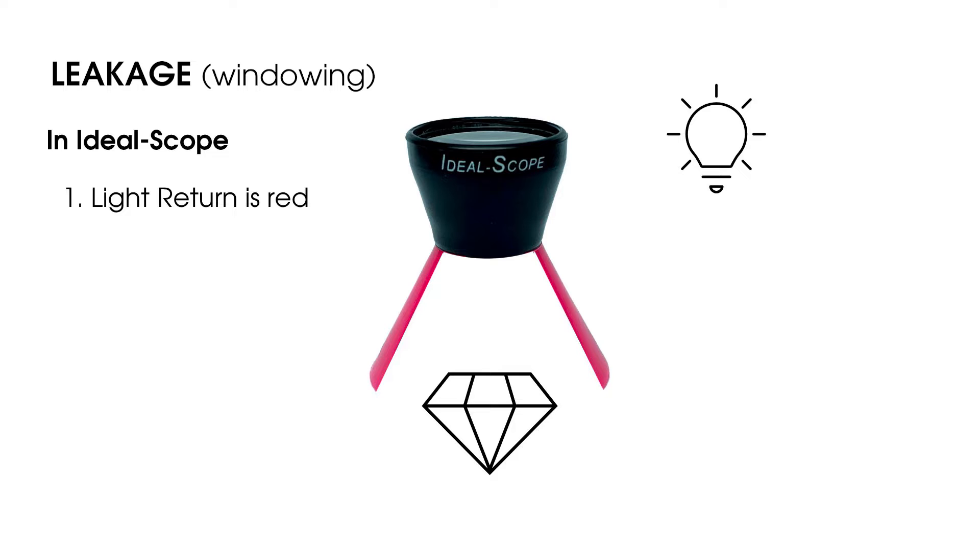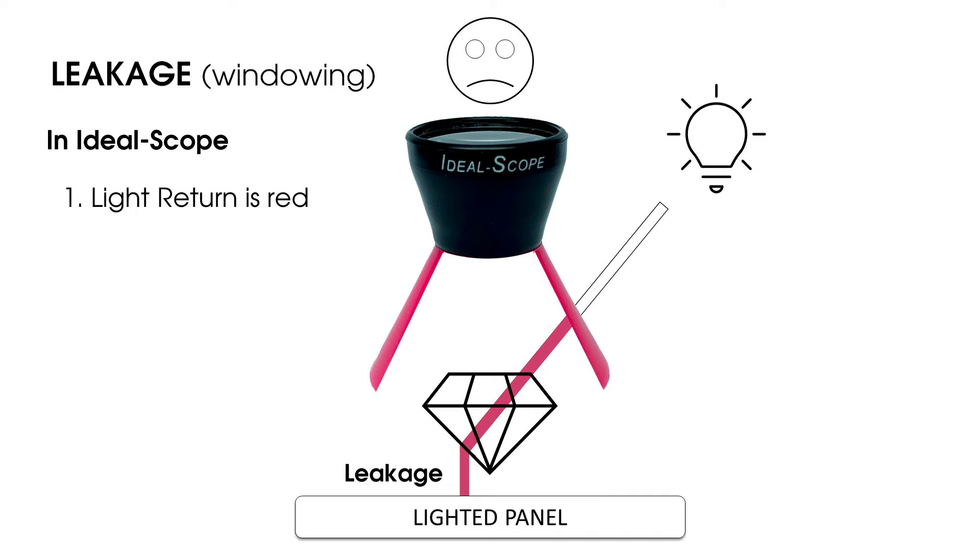Alternately, if light escapes through the bottom of the stone, that's leakage. It means the facets are acting as windows instead of mirrors. A viewer looking through the lens sees through the bottom of the diamond. Professional setups use a lighted panel under the diamond to expose obvious leakage. So in IdealScope analysis, a viewer will see leakage as white or light pink.